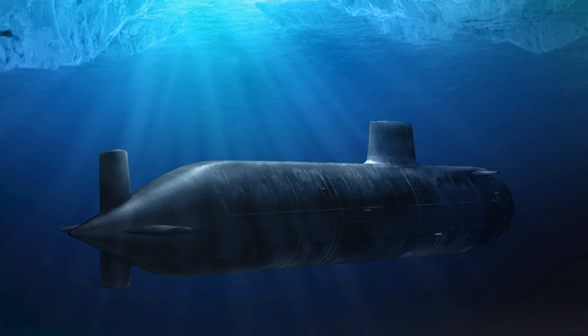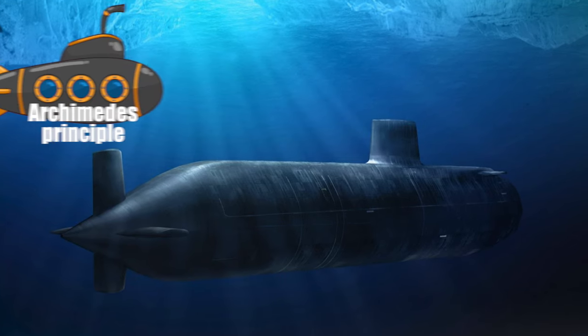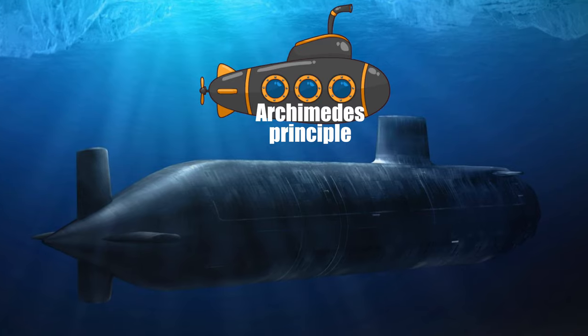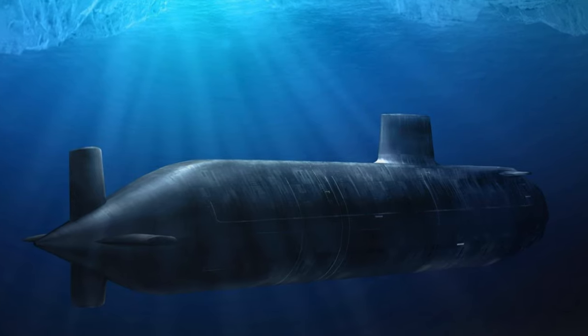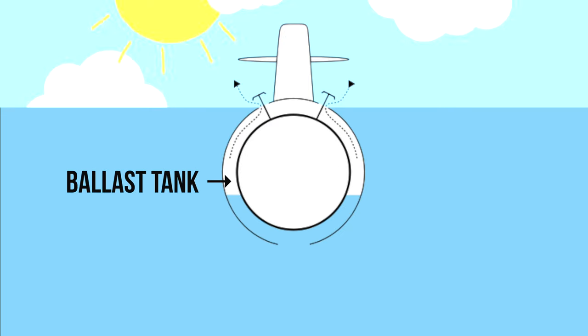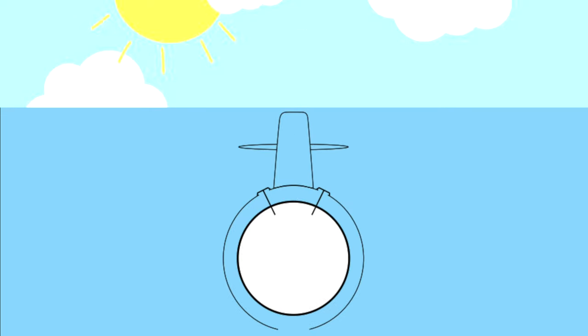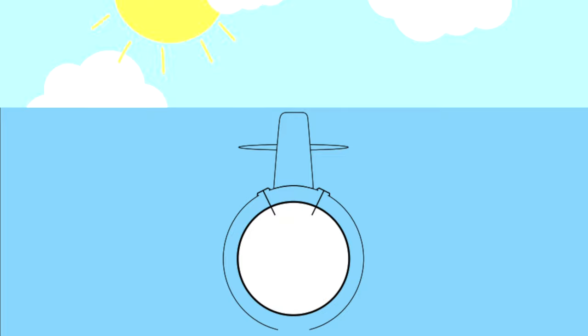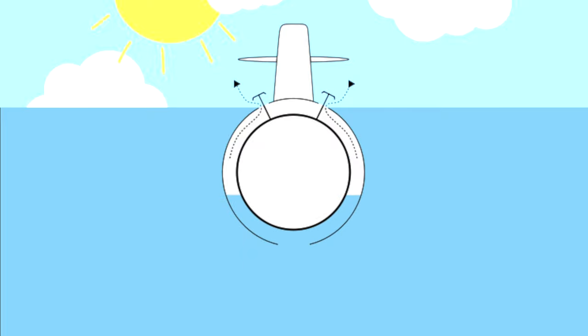Submarines are designed to travel while completely submerged underwater and they rely on the Archimedes principle in order to maintain a constant depth. In submarines, ballast tanks are used to control the buoyancy of the vessel. The amount of water filled will determine the depth to which the submarine can dive, so that they may float or sink as desired.